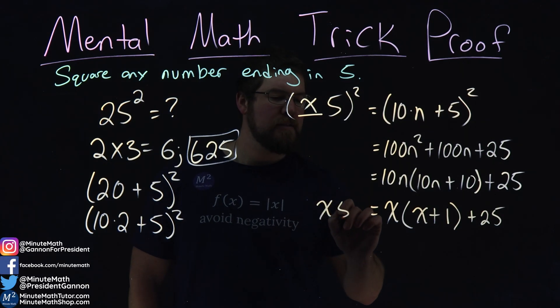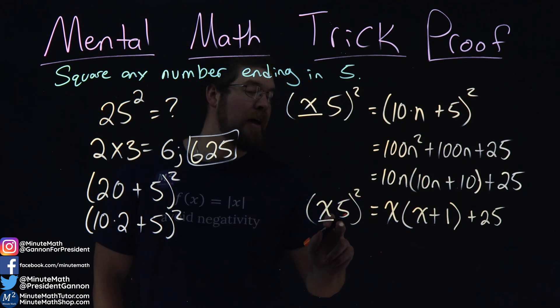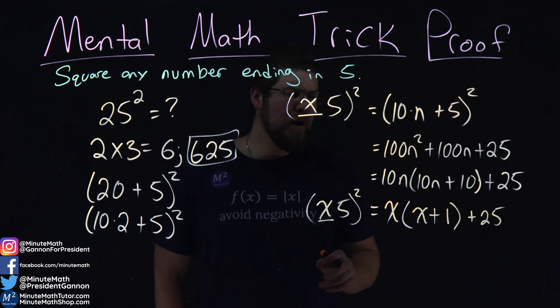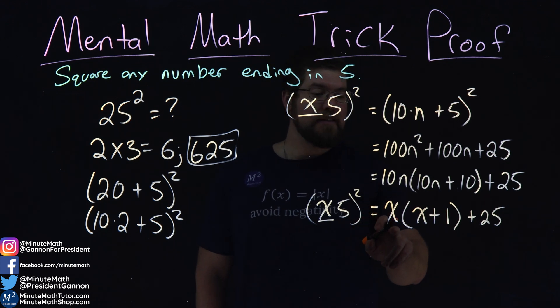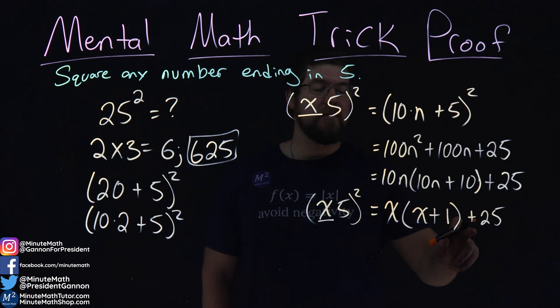Our trick here of x, whatever that first bits are, with a 5 at the end of the units column, squared is equal to that x times x plus 1 plus 25.